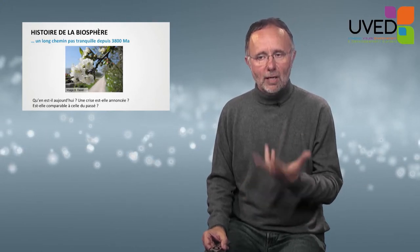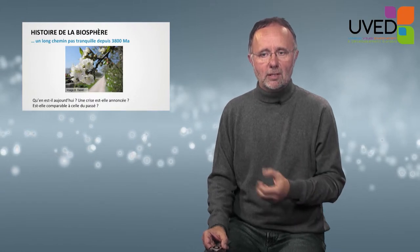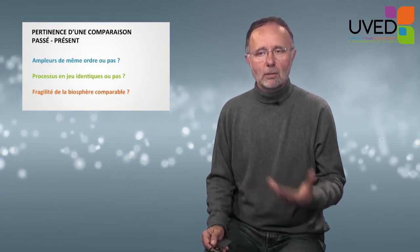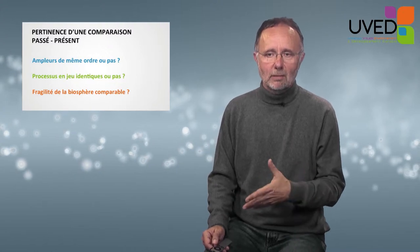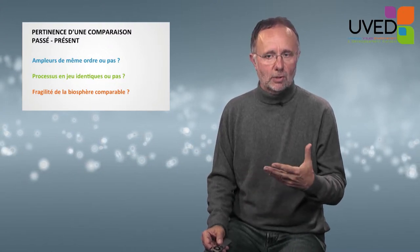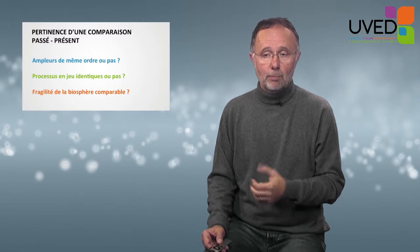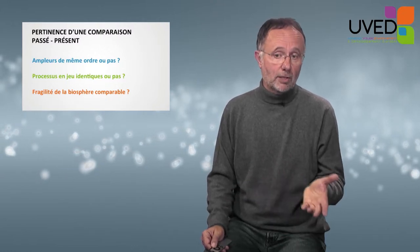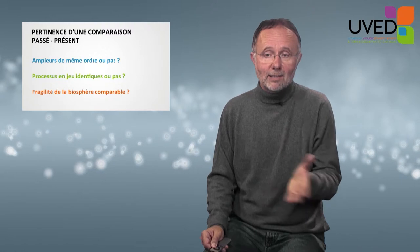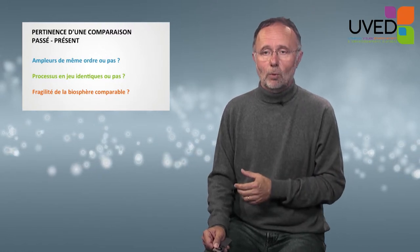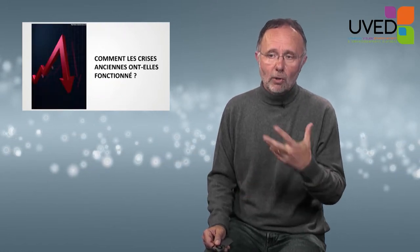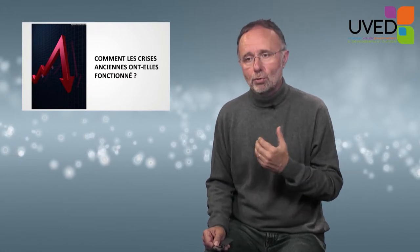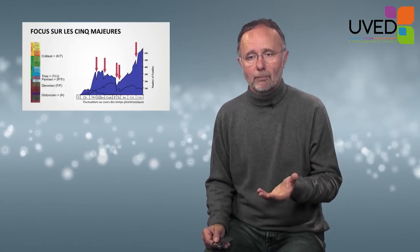Over the 3,800 million years of life, what about today? Is there a new crisis announced? Would it be comparable to the past ones? What is the relevance of a comparison between the past and the present? Are the processes at stake identical? And is today's biosphere fragility comparable to the fragility of the biosphere in the past? So let us try to understand how the previous crises took place, focusing on the five major crises.